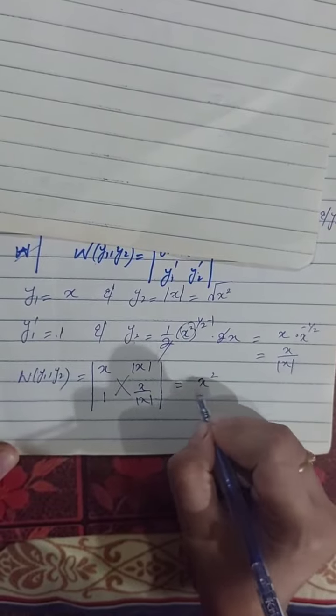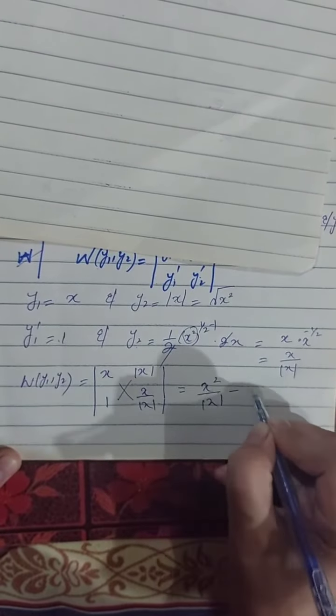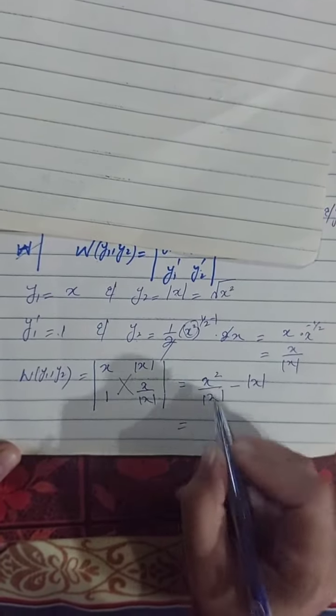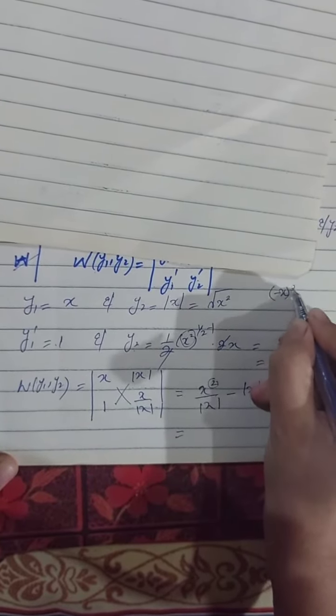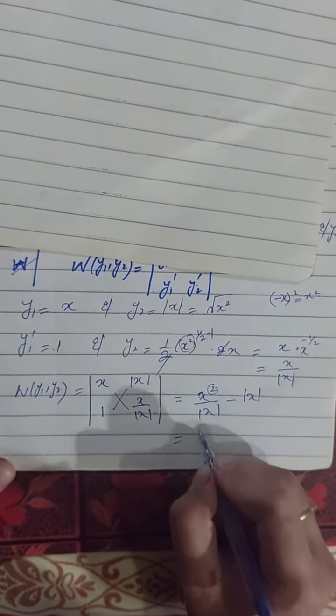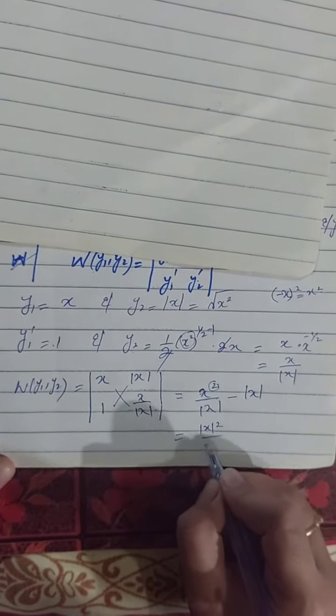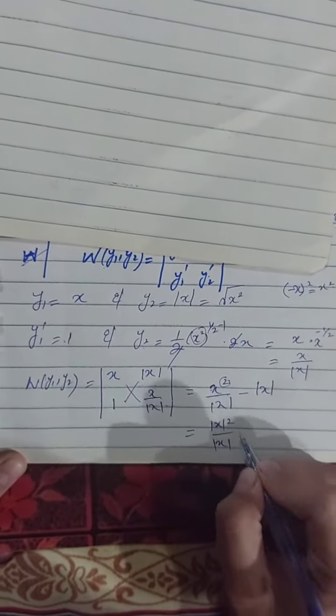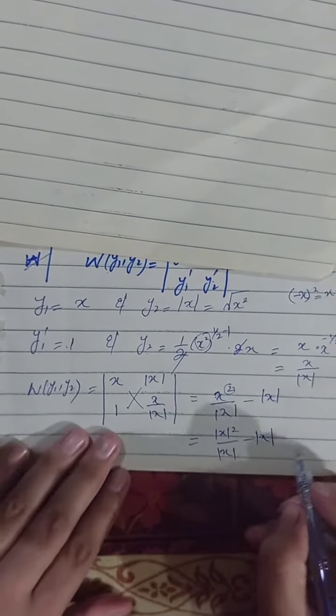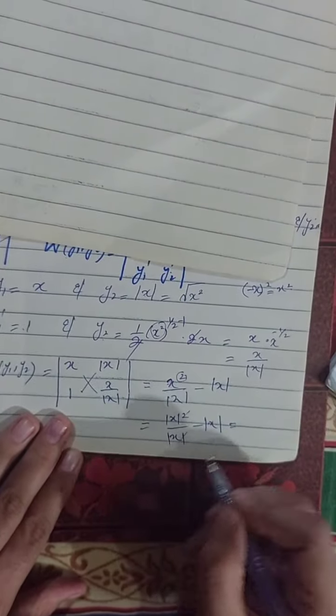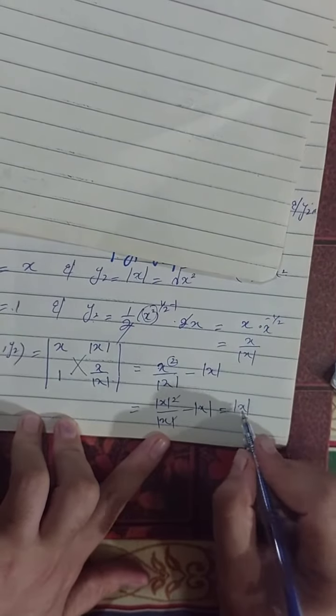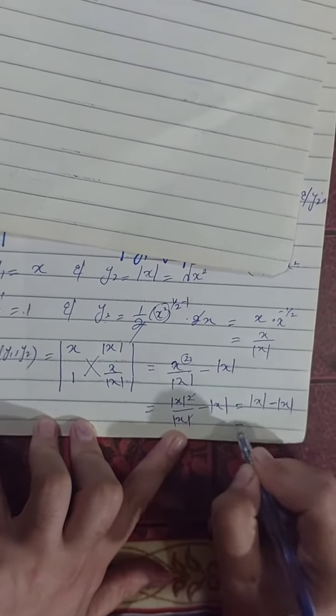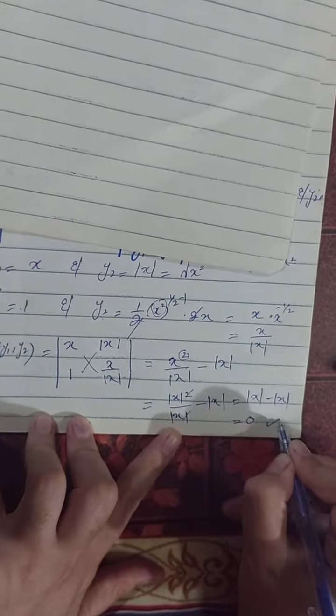This gives x squared divided by x absolute. X squared is always positive, so we can use x absolute squared because absolute will always give us positive value. By cancellation, we get x absolute minus x, which equals zero. Zero is the Wronskian.